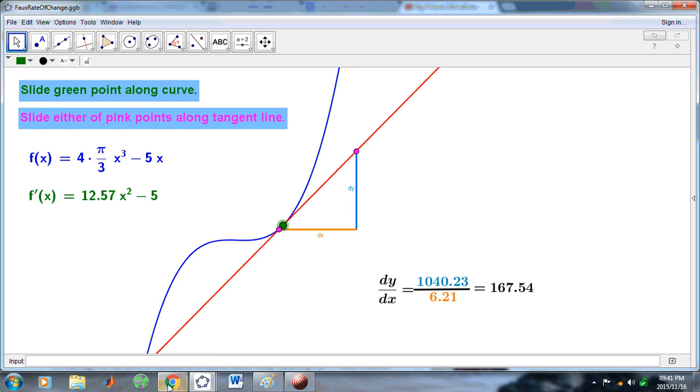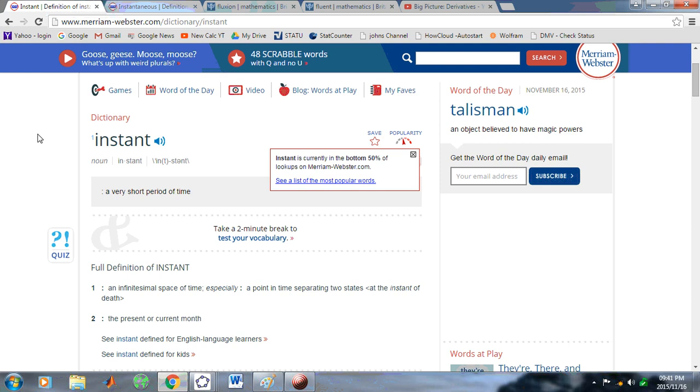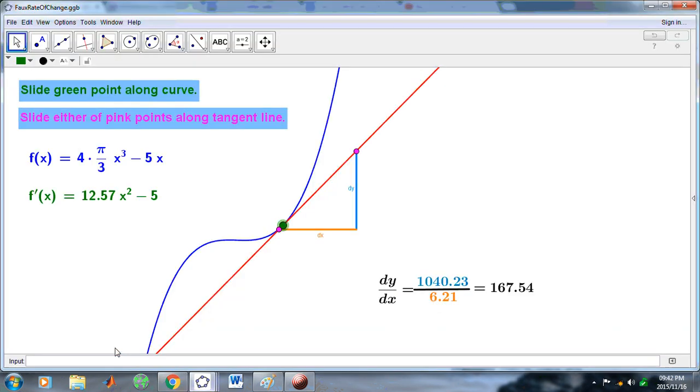Let's look at the definition of instant. Webster says an instant is a very short period of time. I'm just going to look at the first definition, which says an infinitesimal space of time, especially a point in time separating two states. If you go back to this diagram, it's a point separating two states. What is this point separating? Can you tell me what it's separating? What two states is it separating?